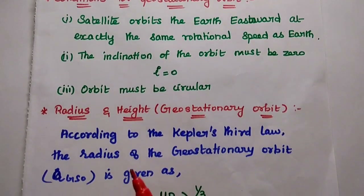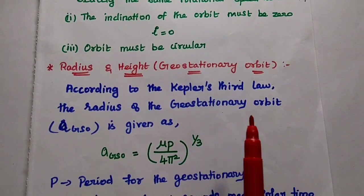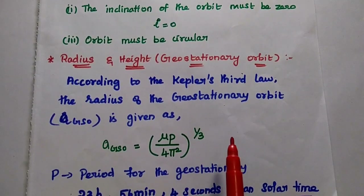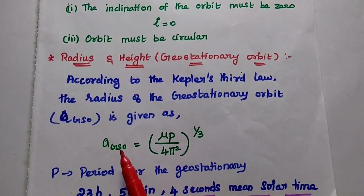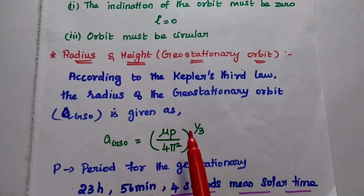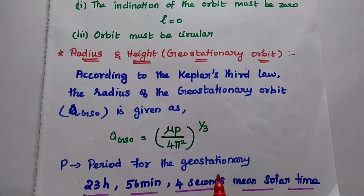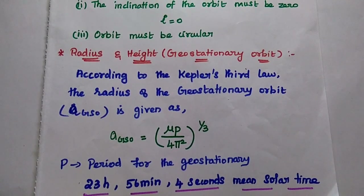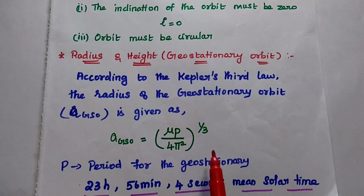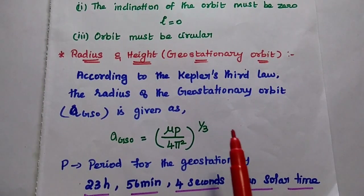Next we analyze the radius and height of the geostationary orbit using Kepler's third law. The radius of the geostationary orbit A_GSO equals (mu times P squared divided by 4 pi squared) to the power of one-third. Here P is the period for the geostationary orbit, which is 23 hours 56 minutes 4 seconds in solar time.